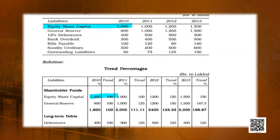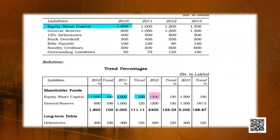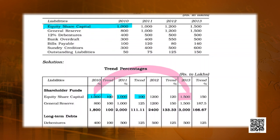We consider 2010 as the base year, so the trend is 100. In 2011 it is 1000 — no change, trend remains 100. In 2012, Equity Share Capital is 1200, which is 120%, showing an increase of 20%. In 2013 it is 1500, comparing it with 2010, it is 150%. This is trend analysis for Equity Share Capital.